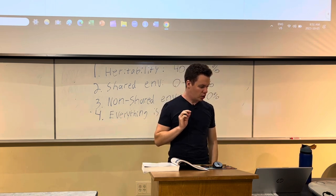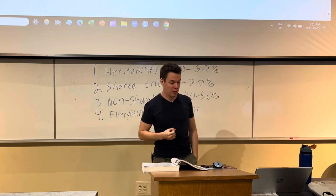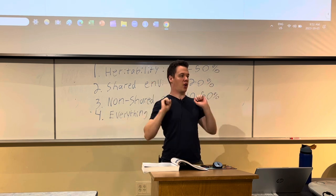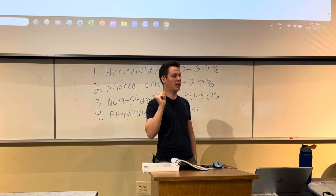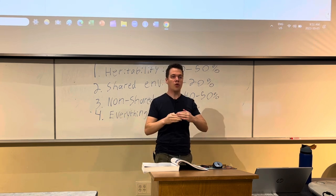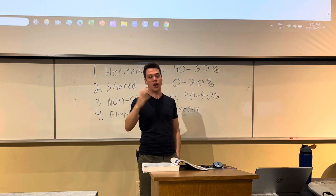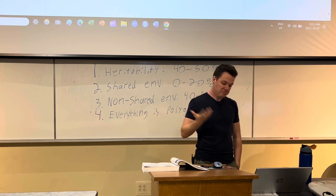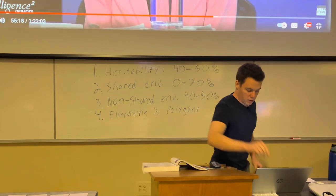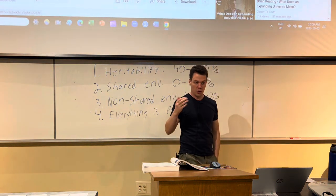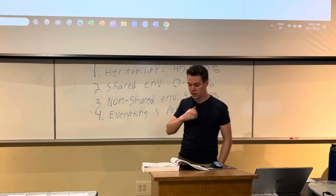One more clip to close out the behavior genetics section — from a debate titled 'Is Parenting Overrated?' The people on both sides are world-class experts. They discuss polygenic scores, which is a new area of research. We are now moving beyond twin studies and adoption studies and actually looking directly for correlations between specific genetic variants and human behavioral differences. I will not be asking you about polygenic scores, but that's where the field is moving now.